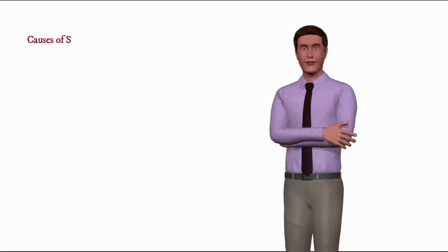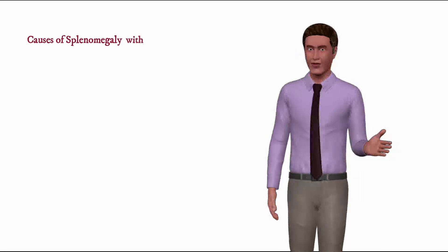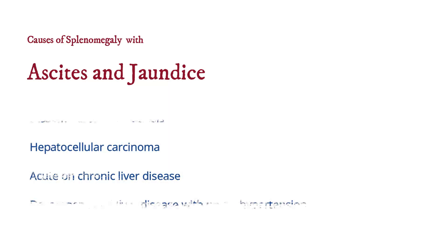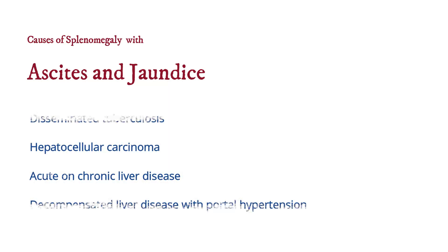Causes of splenomegaly with both ascites and jaundice include disseminated tuberculosis, hepatocellular carcinoma, acute on chronic liver disease, and decompensated cirrhosis with portal hypertension.